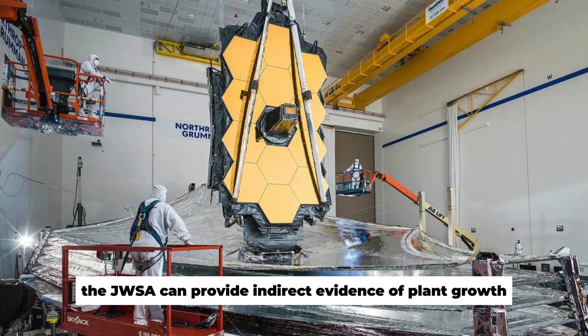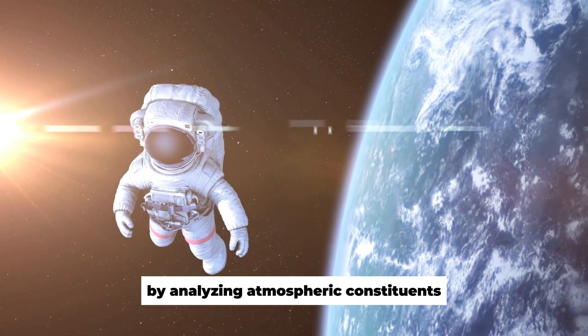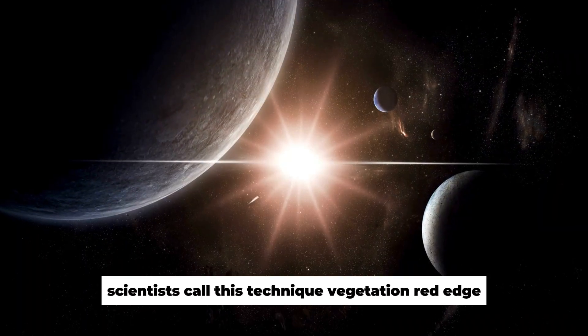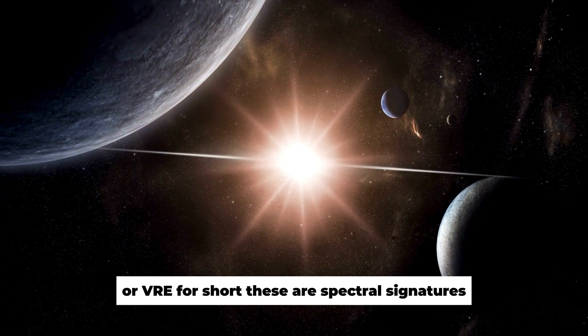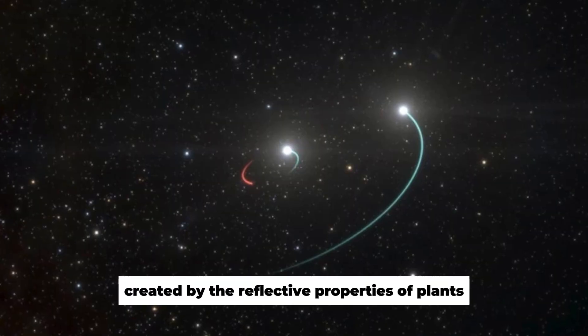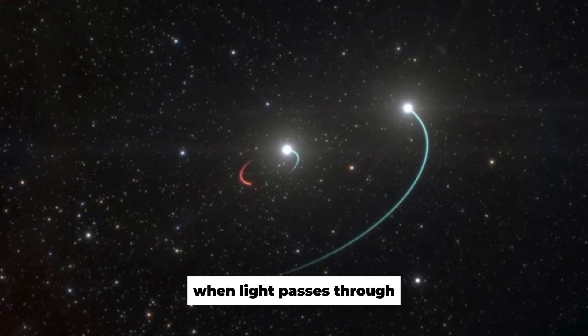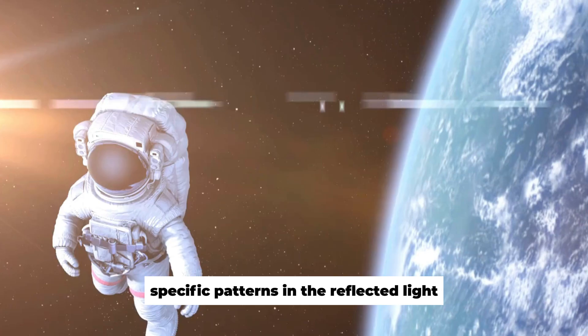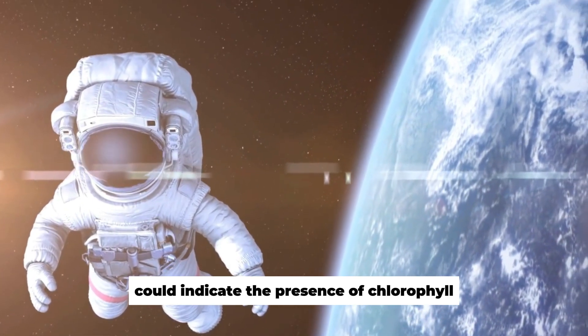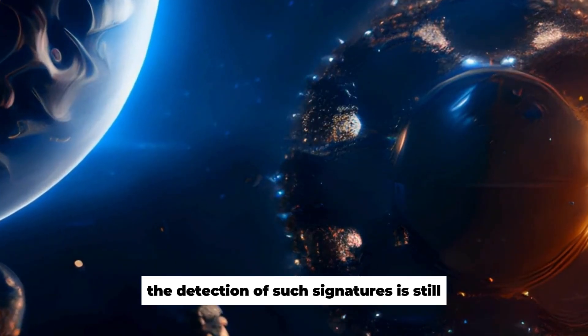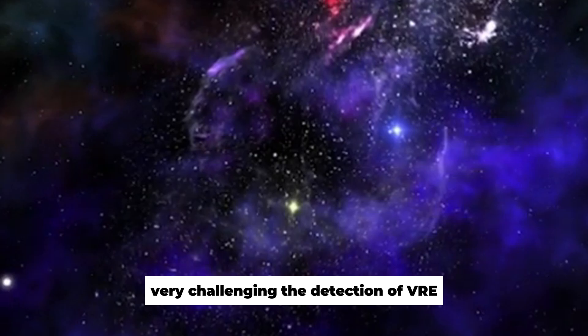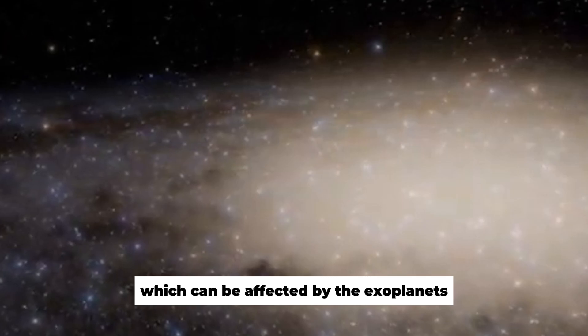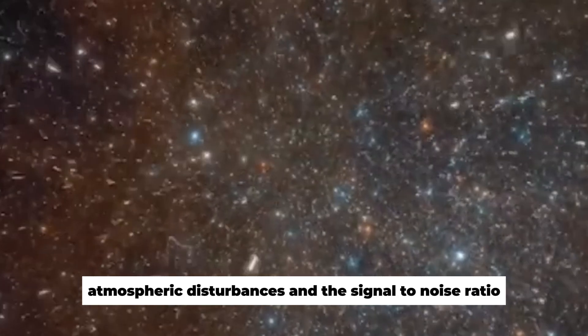The JWST can provide indirect evidence of plant growth by analyzing atmospheric constituents and reflected light spectra. Scientists call this technique Vegetation Red Edge, or VRE for short. These are spectral signatures created by the reflective properties of plants in the near-infrared range. When light passes through the atmosphere of an exoplanet and is reflected by the surface, specific patterns in the reflected light could indicate the presence of chlorophyll or other photosynthetic pigments. The detection of such signatures is still very challenging. The detection of VRE requires extremely precise measurements and high resolution, which can be affected by the exoplanets' atmospheric disturbances and the signal-to-noise ratio.